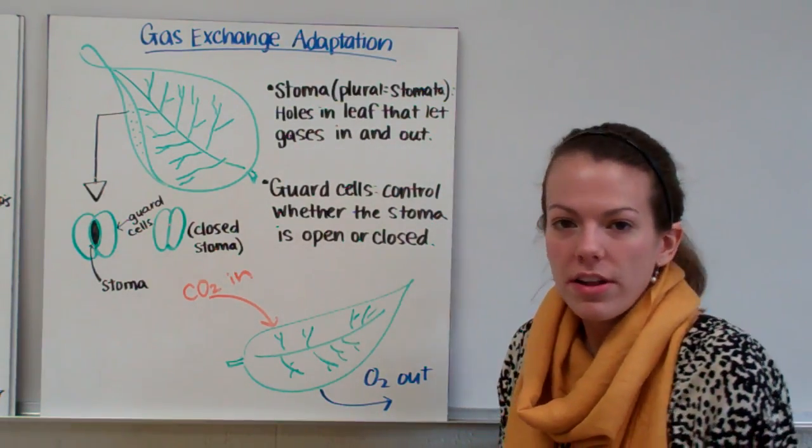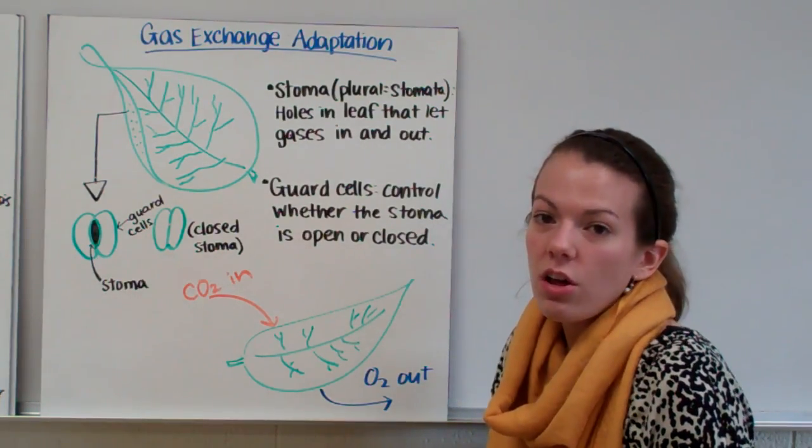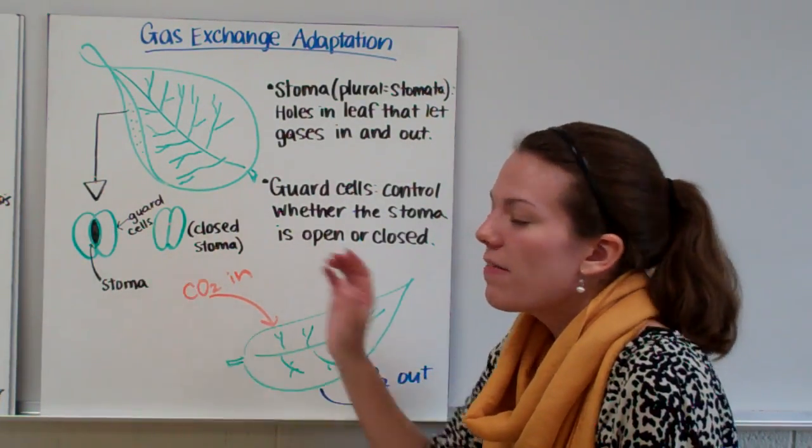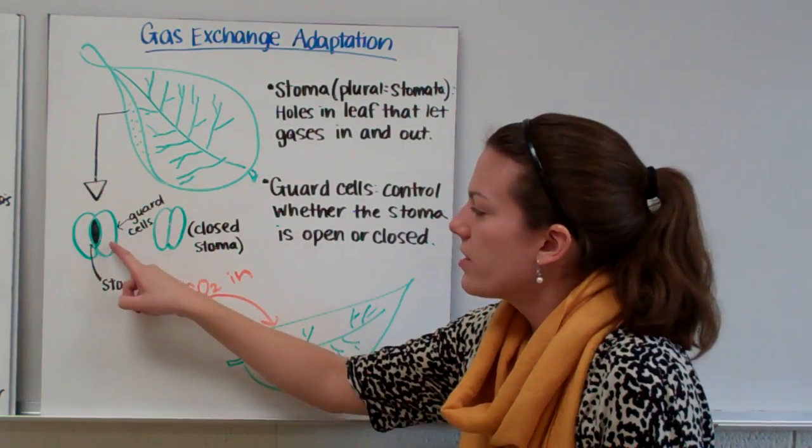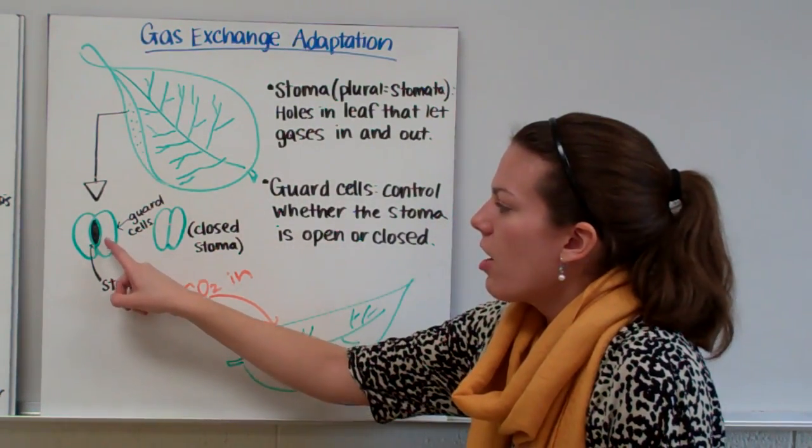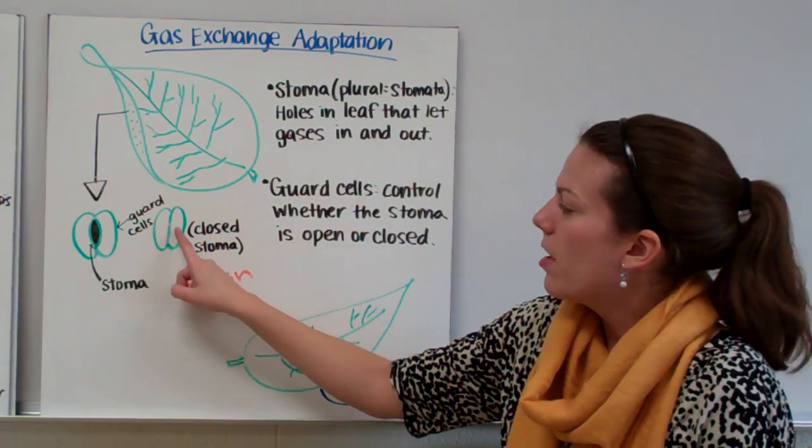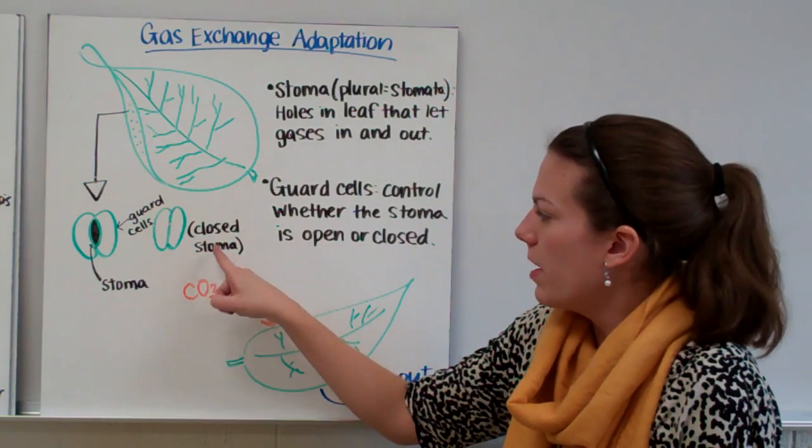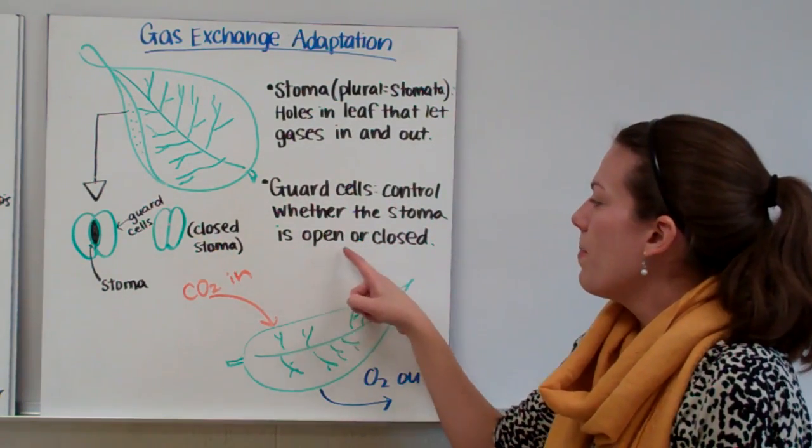Now sometimes you don't want gas to pass in and out of a leaf. And so the leaf is going to want to close off the stoma. So we have these cells on the outside of the stoma called guard cells. So these are two guard cells. And these guard cells here are allowing the stoma to be open. And then they can change shape and close the stoma. So this would be a closed stoma. So the guard cells control whether the stoma is open or closed.